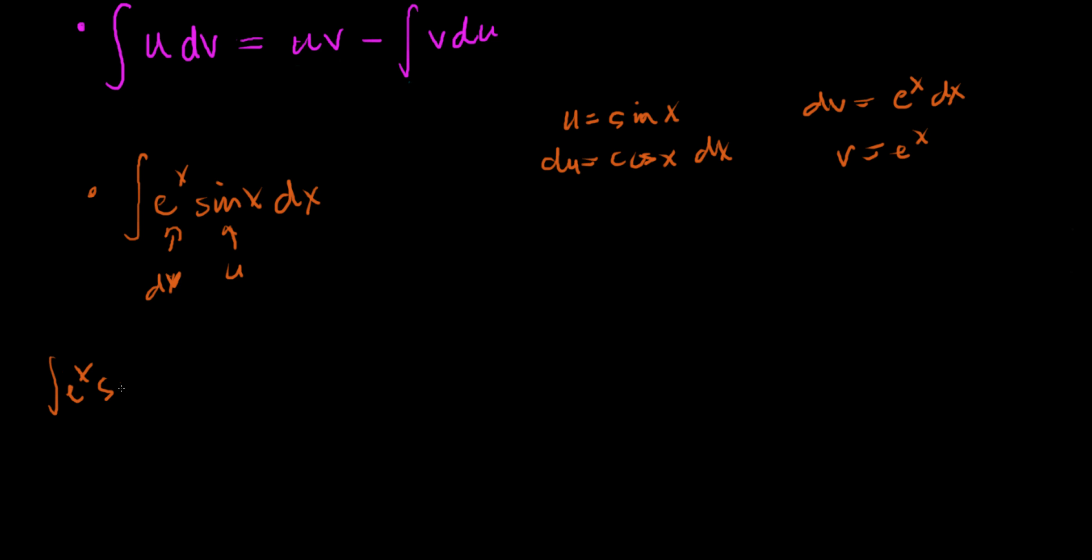And dv is e to the x dx, and so v is just e to the x. Now we're going to try this out. We always want to be sure to write the integral that we're trying to solve so that way it's always at the forefront of our minds. We need uv, that's e to the x times sine of x.